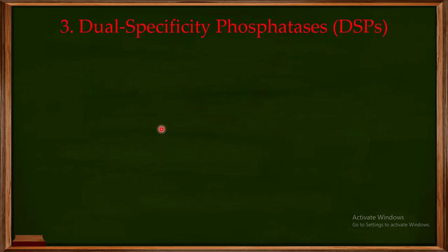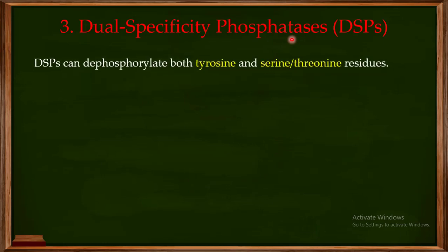The third important class is the dual specificity phosphatases. Unlike tyrosine phosphatases, which target only tyrosine, or serine threonine phosphatases, which target serine and threonine, the dual specificity phosphatases have the ability to dephosphorylate tyrosine, serine, and threonine residues all together — meaning they can remove the phosphate group from any of these three amino acids.